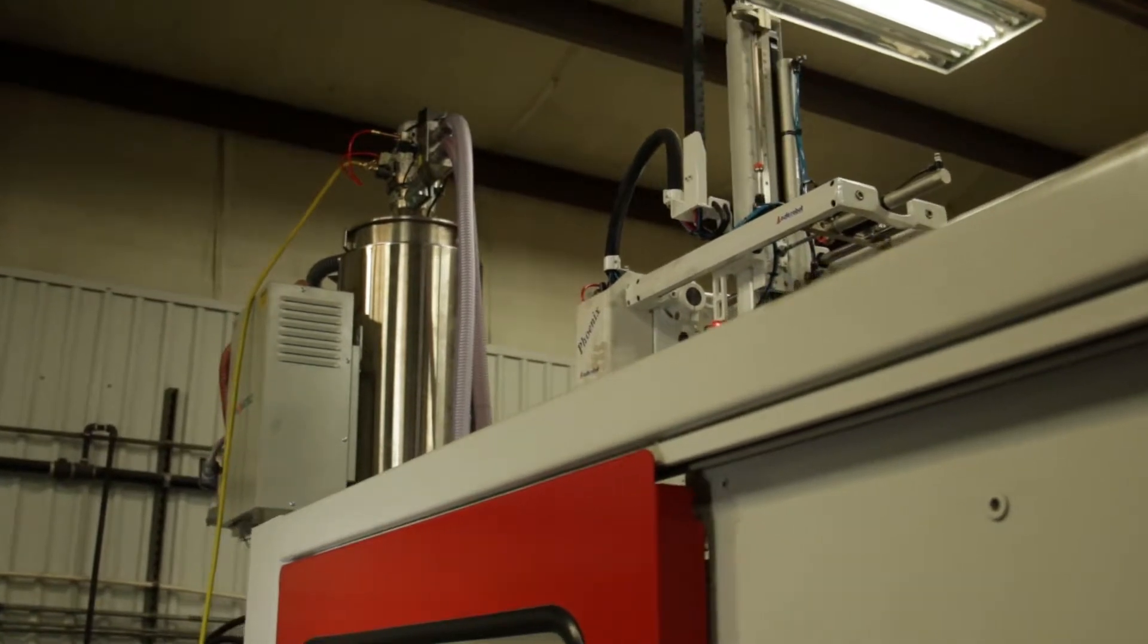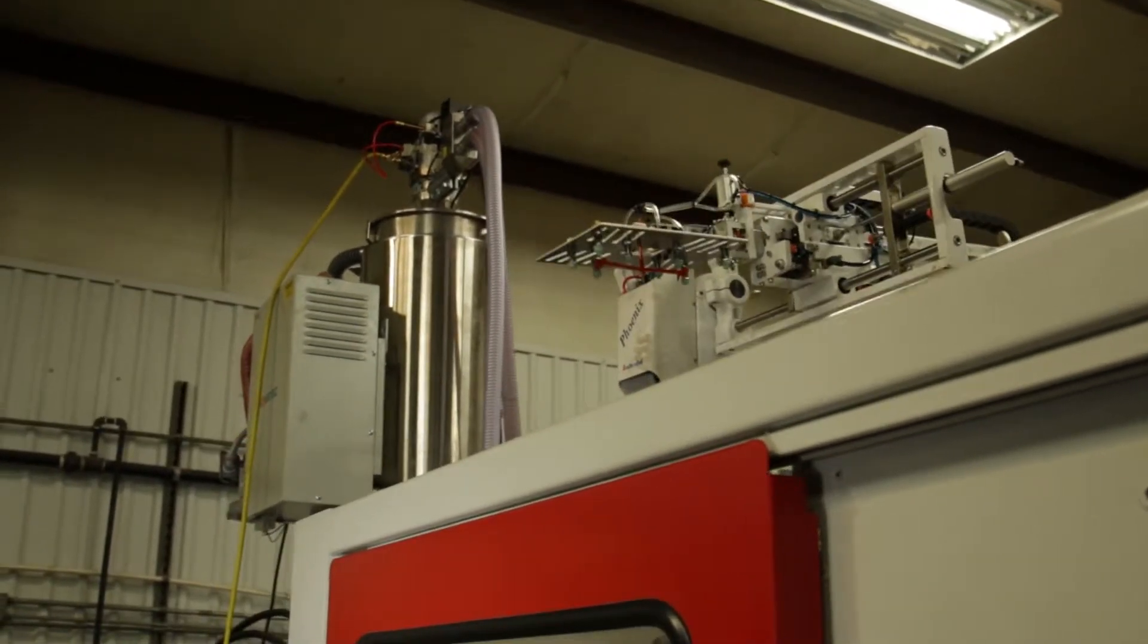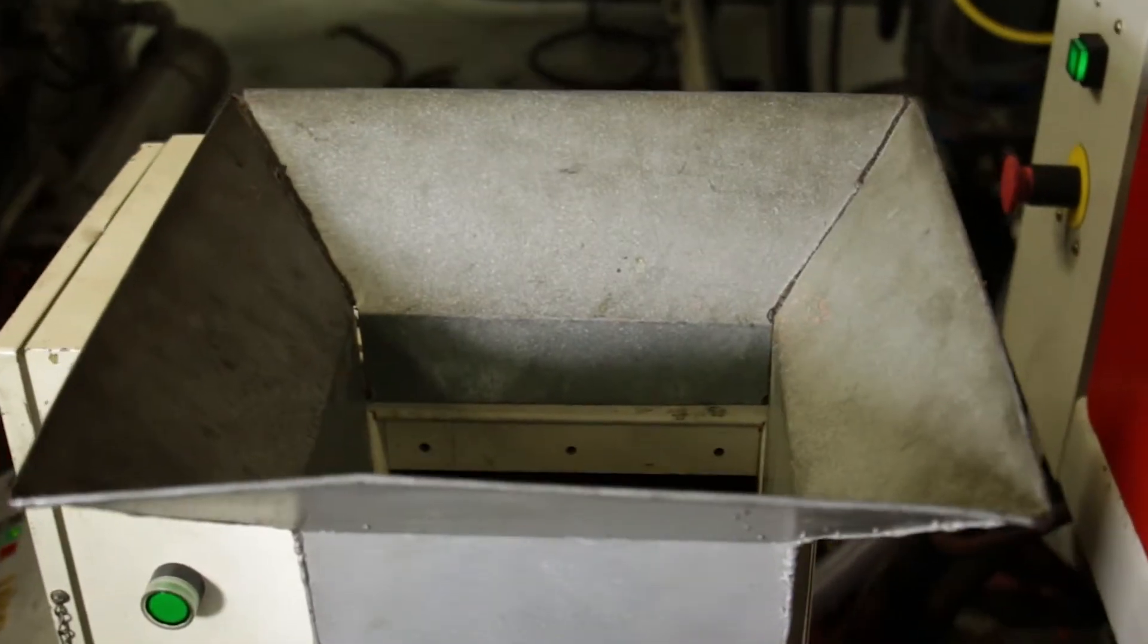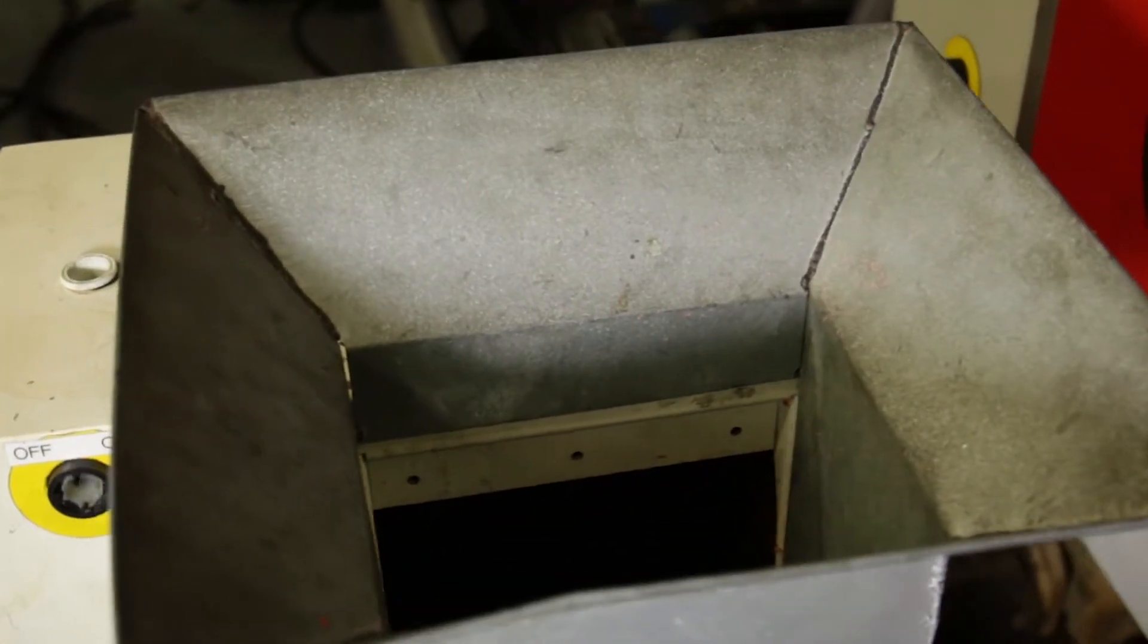Automation can also be included in the mold. Simple part pickers can be used to remove the sprue or pull the parts from the mold and place them in a specific location.